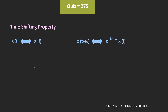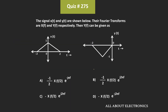The Fourier transform of the signal y is equal to minus 1/2 times X(f/2) times e to the power j times 2πf. Hence, for the given question, option b is the correct answer.